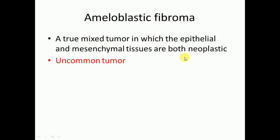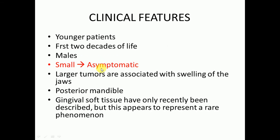In ameloblastic fibroma, the epithelial and mesenchymal tissues are both neoplastic. It is an uncommon tumor. Regarding clinical features, it is most commonly present in young patients — the first two decades of life are more prone. It is more common in males. If the lesion is smaller in size it will be asymptomatic; if larger, it will be associated with swelling of the jaws and may cause facial asymmetry.